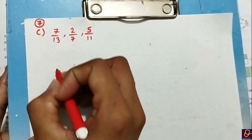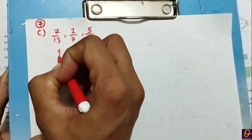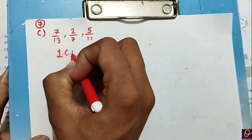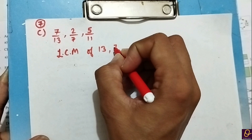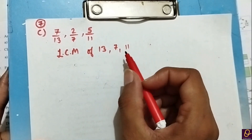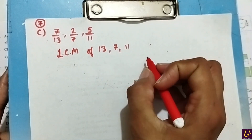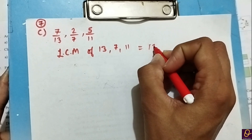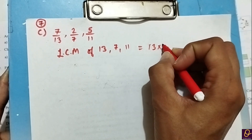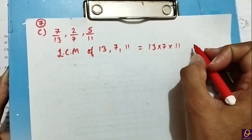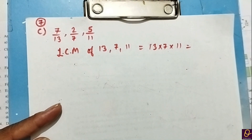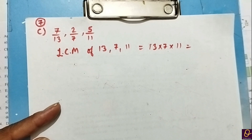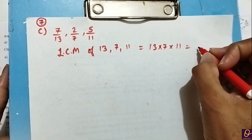Isme sabse pehle LCM lete hain — LCM of 13, 7, and 11. Teeno different numbers hain, koi bhi common factor nahi hoga, toh jab hum multiply karenge woh LCM ho jayega. 13 × 7 = 91, and 91 × 11 = 1001. So LCM is 1001.